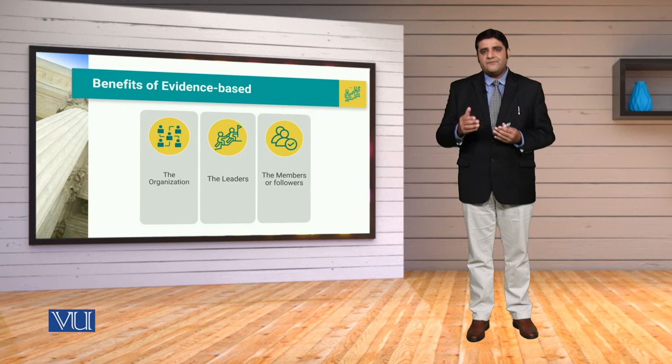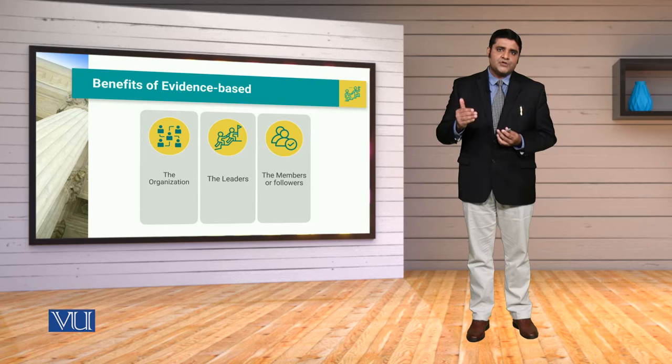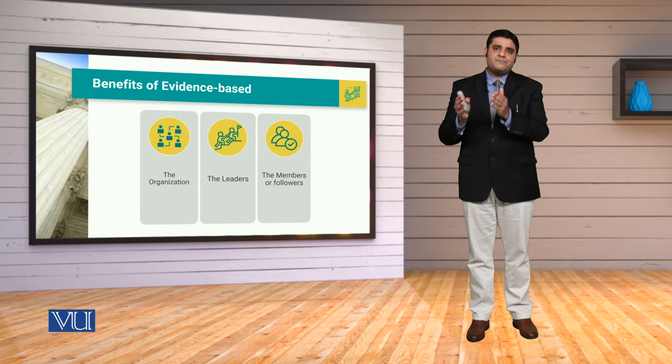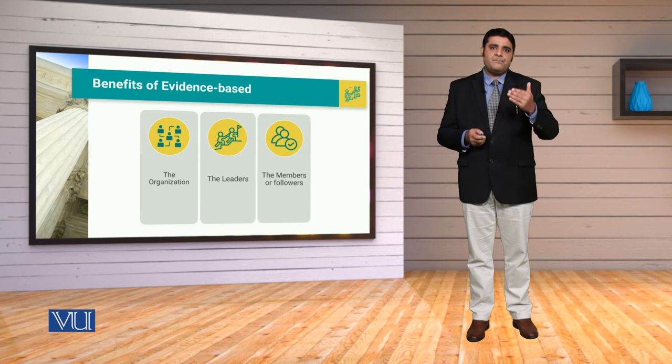Third level per, jab hum benefits ko discuss kar rahe hain, to we have to talk about the benefits associated with the members, or the followers, jo ke us evidence ke direct hit par a rahe hain, jo ke us evidence ko obviously implement bhi karayenge, us problem ko hal karne ke liye, ya creativity aur innovation ko le kar aane ke liye. So members ko satisfaction milegi, aur us satisfaction se unki loyalty, engagement, involvement in the organization, woh behtar se behtar hoti hai. So we have to see, ke ek evidence ke saath, jab hum problem solving ki baat kar rahe hain, kaunsi costs hain, kaunse benefits hain, aur cost versus benefit analysis karke, obviously hum is baat par focus karenge ke jab hamare benefits would be more than the costs, so that is the evidence that we have to use.